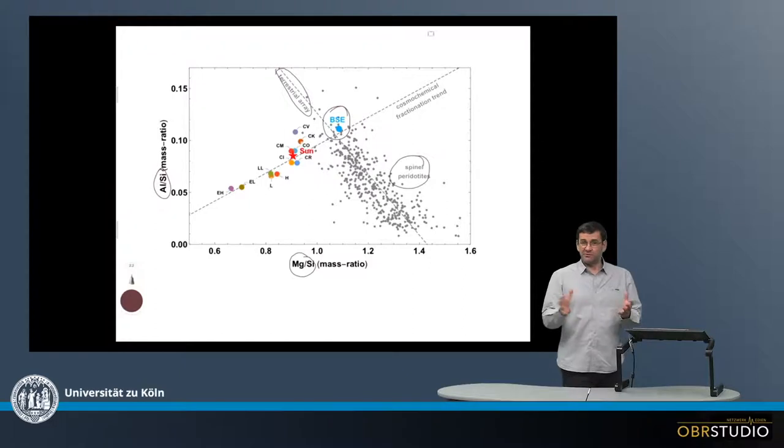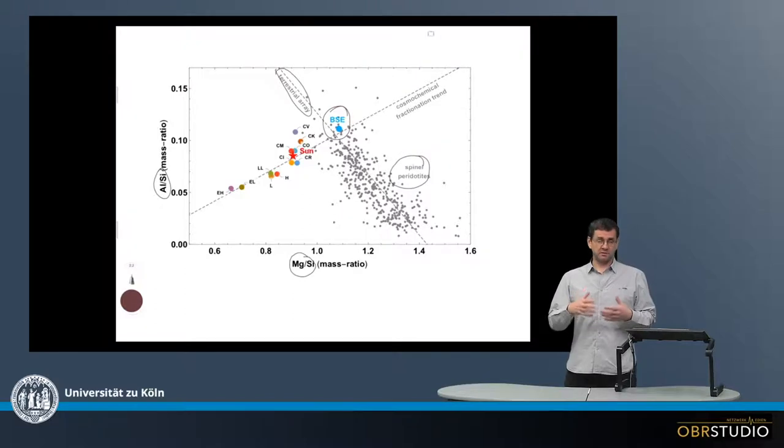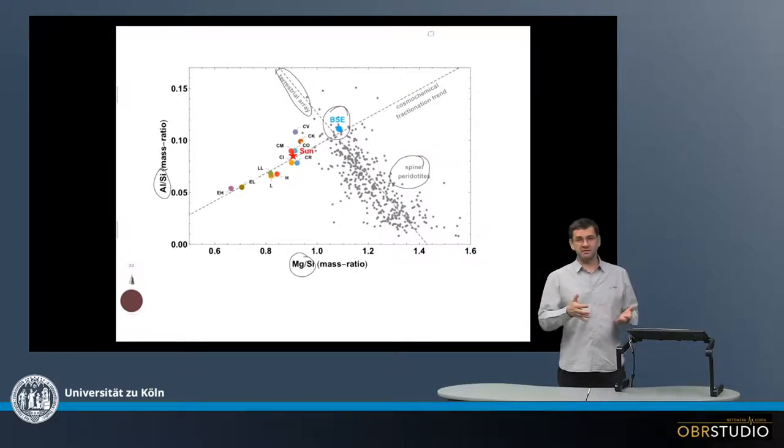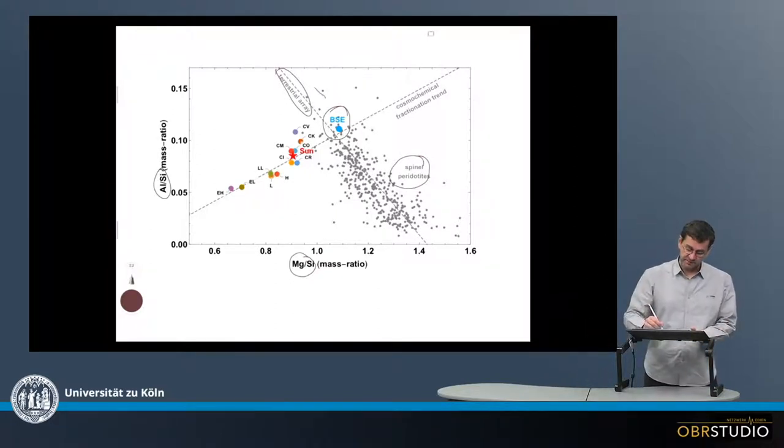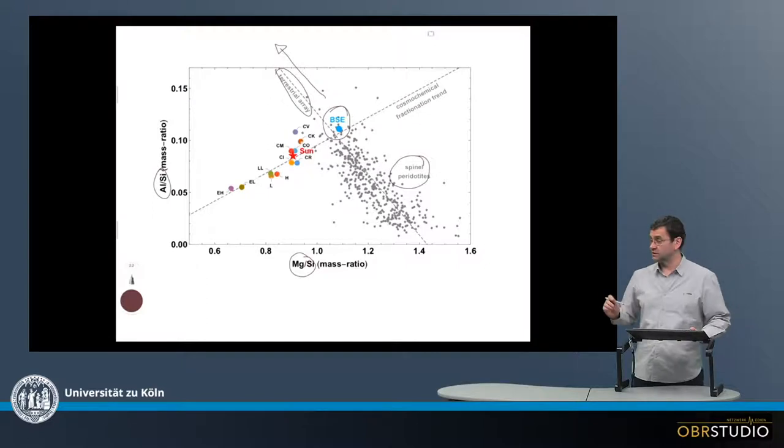Now assume we have a rock with a bulk silicate earth composition. And this rock then starts to melt and crystallization occurs. This melt will be rich in silicon and aluminum. So we should expect that this melt plots somewhere up here, in the extension of this terrestrial array.